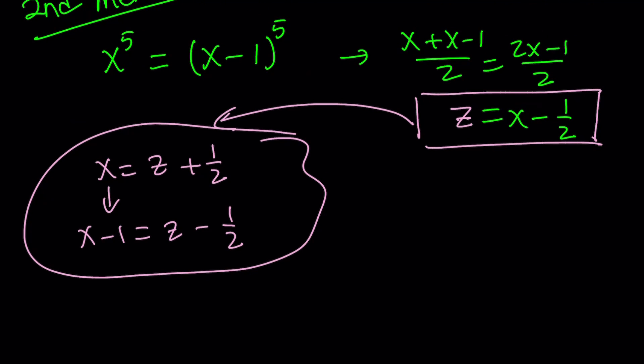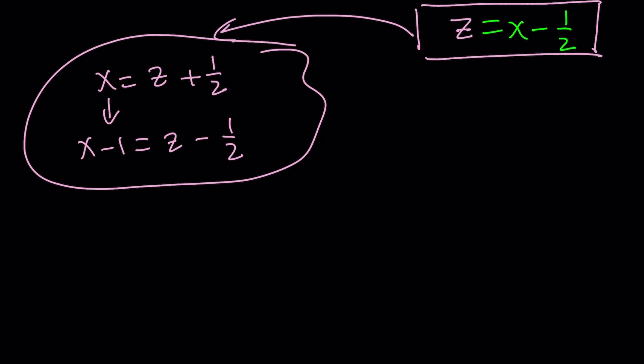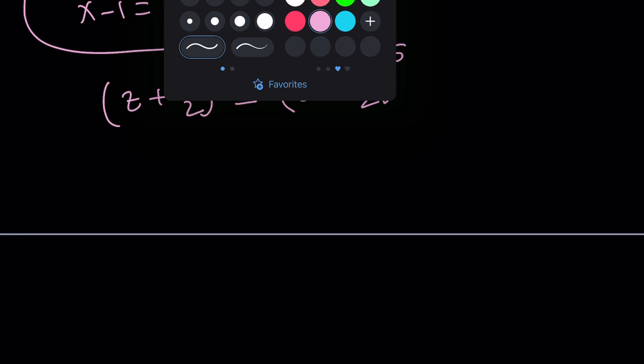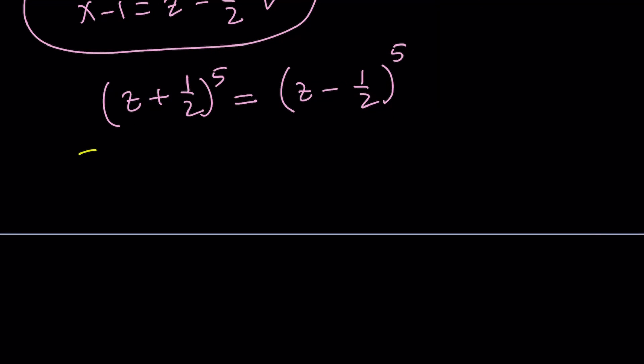So let's go ahead and plug it in. x is going to be replaced with z plus 1 half. So this is going to become z plus 1 half to the fifth power. And x minus 1 is going to be replaced with z minus 1 half. So we're going to get z minus 1 half to the fifth power on the right hand side. Great. Now, when you expand everything, obviously, some of the terms are going to cancel out. Some terms are going to be doubled on the same side, so on and so forth.